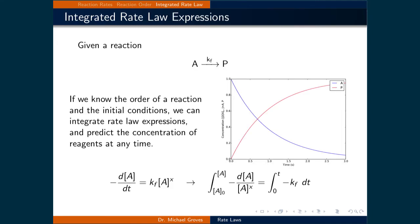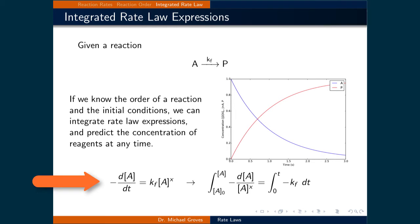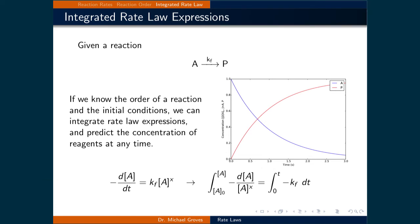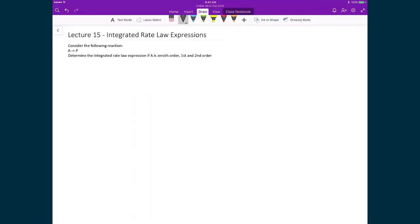Consider this simplified reaction: reactant A goes to product P with rate constant k_f. If we know the order of a reaction and the initial conditions, we can integrate the rate law expression and predict the concentration of reagents at any time. This integral is written at the bottom of the slide, where the variable x is replaced with the order of A. Once we integrate, we can draw plots showing how concentration changes as a function of time, and start to answer the question: how long does a given process take?